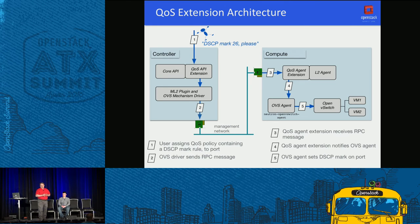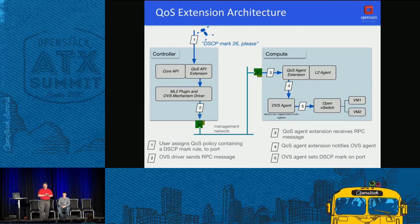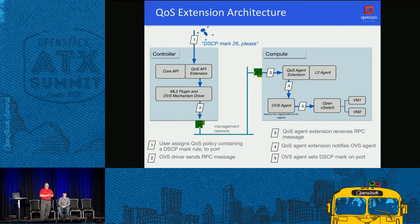In the QoS extension architecture, the Neutron controller process has the core API and the QoS API extension, which talks to the ML2 plugin and OVS mechanism driver. The OVS driver communicates over RPC to the QoS agent extension in the L2 agent, which then notifies the OVS agent using the OVS OFCTL command line - the same interface used to control all Open vSwitch flows.